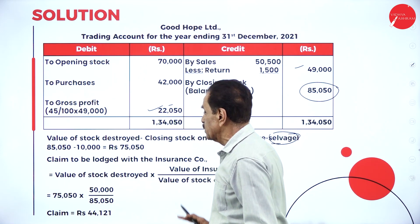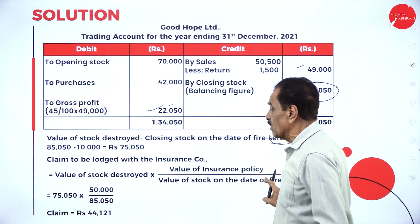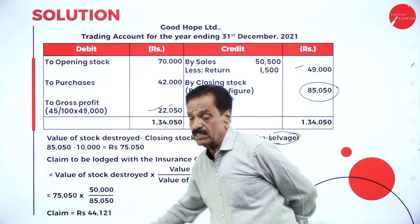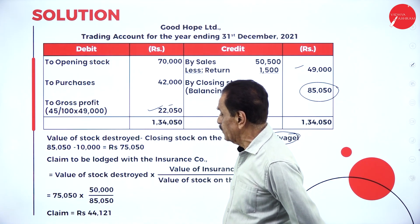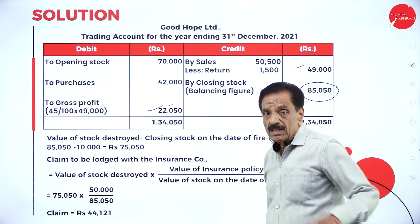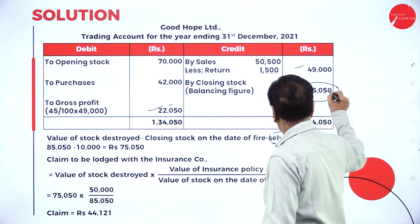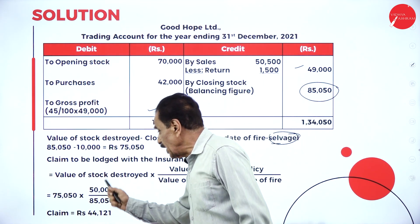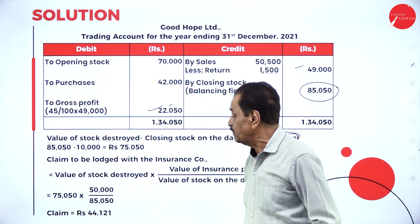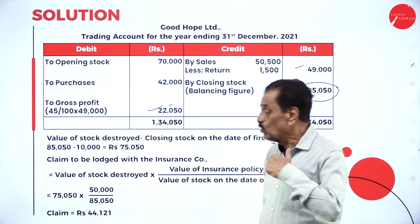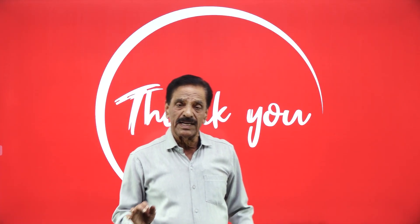Applying the average clause for Problem 2: value of stock destroyed × (insurance policy / stock on date of fire) = 75,050 × (50,000 / 85,050) = Rs. 44,121. So though the claim made is Rs. 75,050, and the stock on date of fire is Rs. 85,050, because the policy is only Rs. 50,000, the insurance company pays only Rs. 44,121 proportionately, as per the average clause.